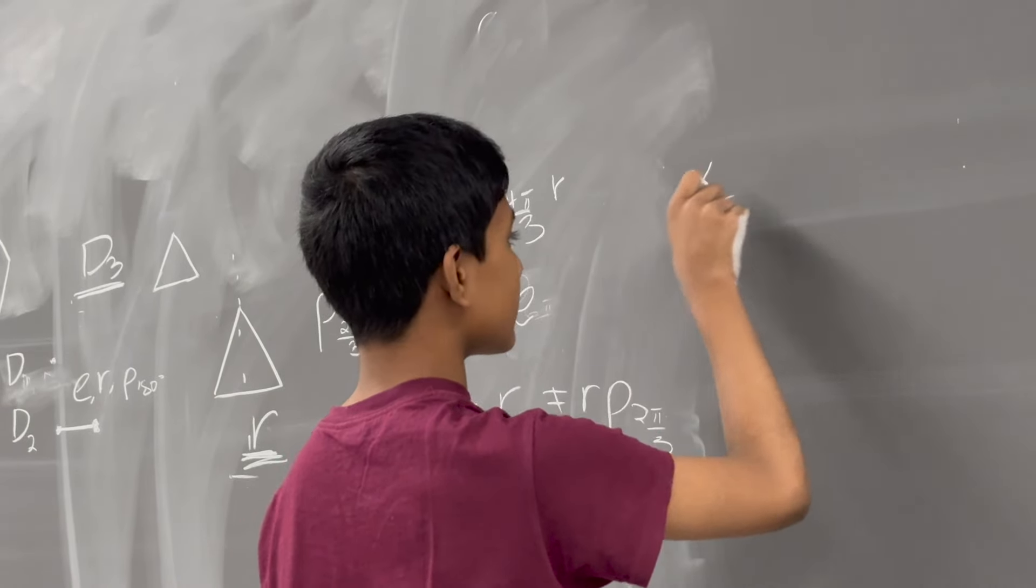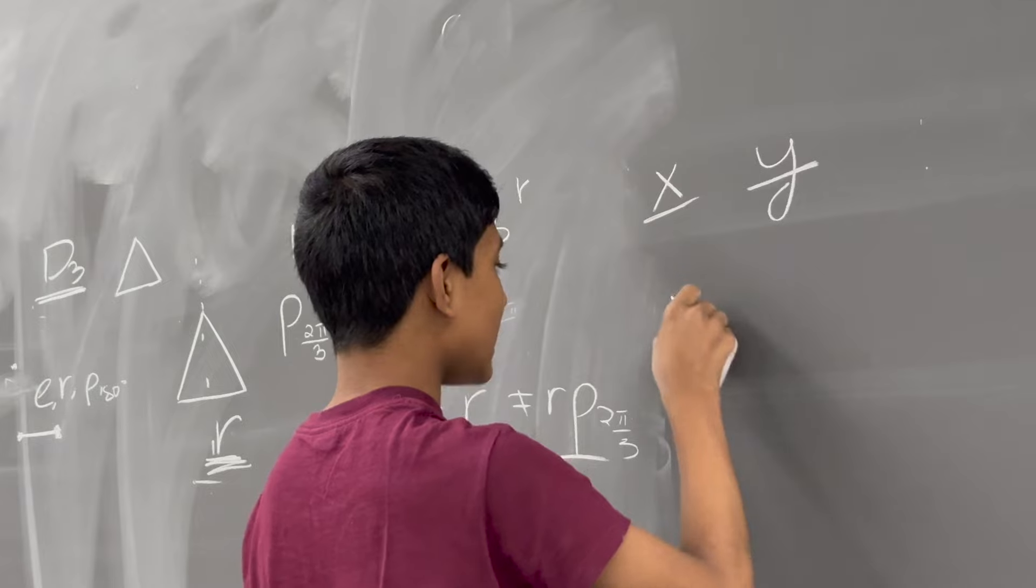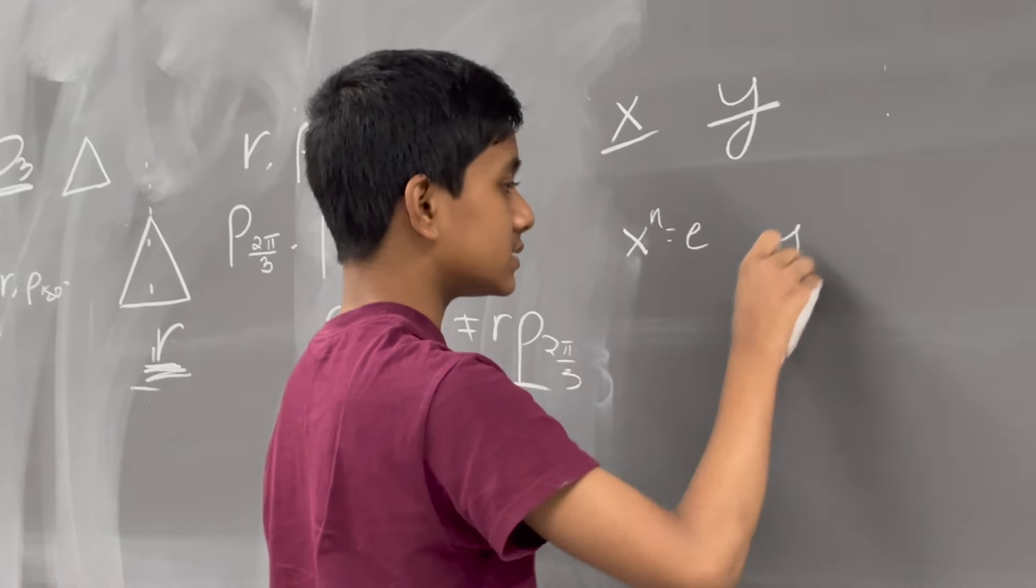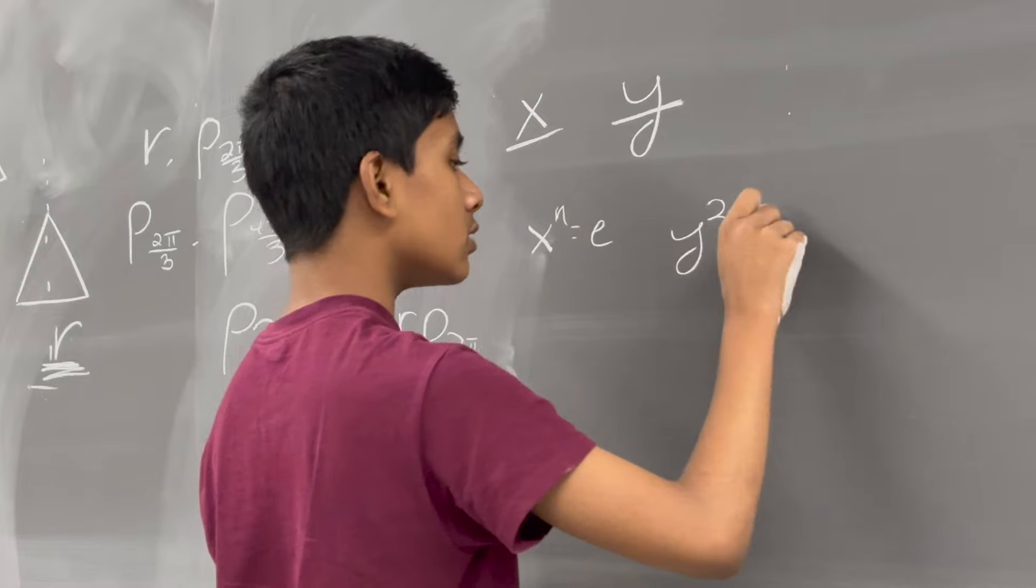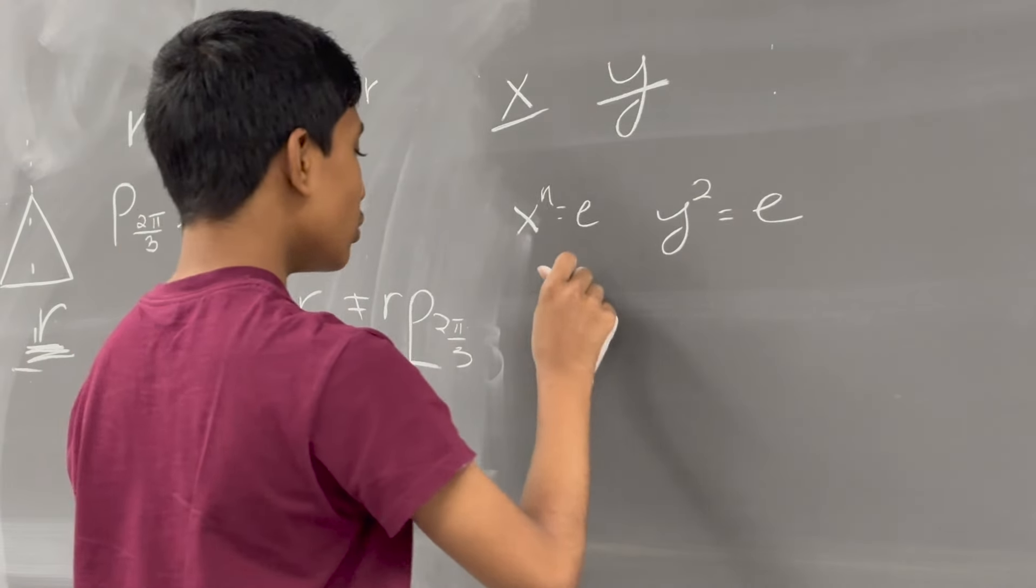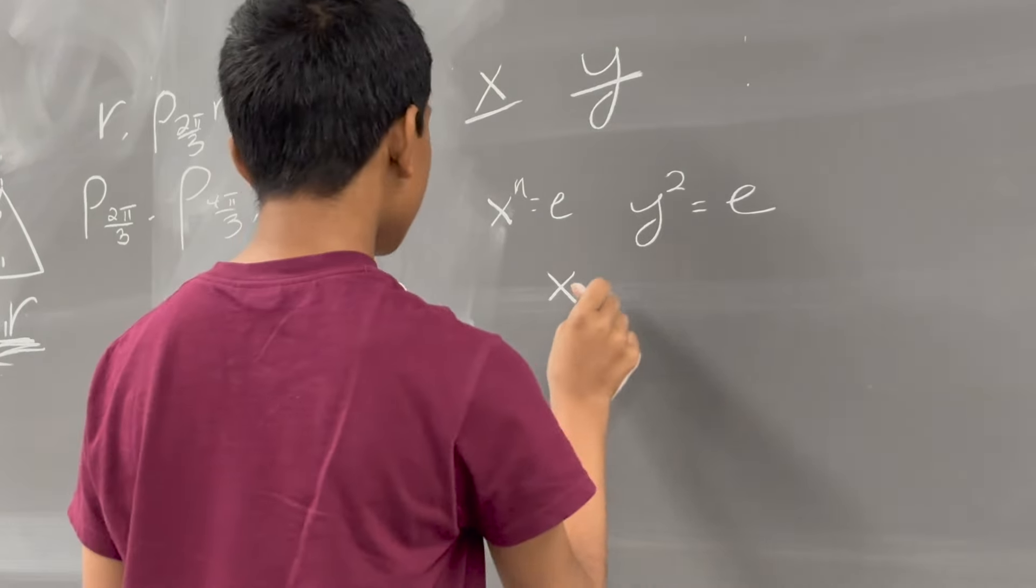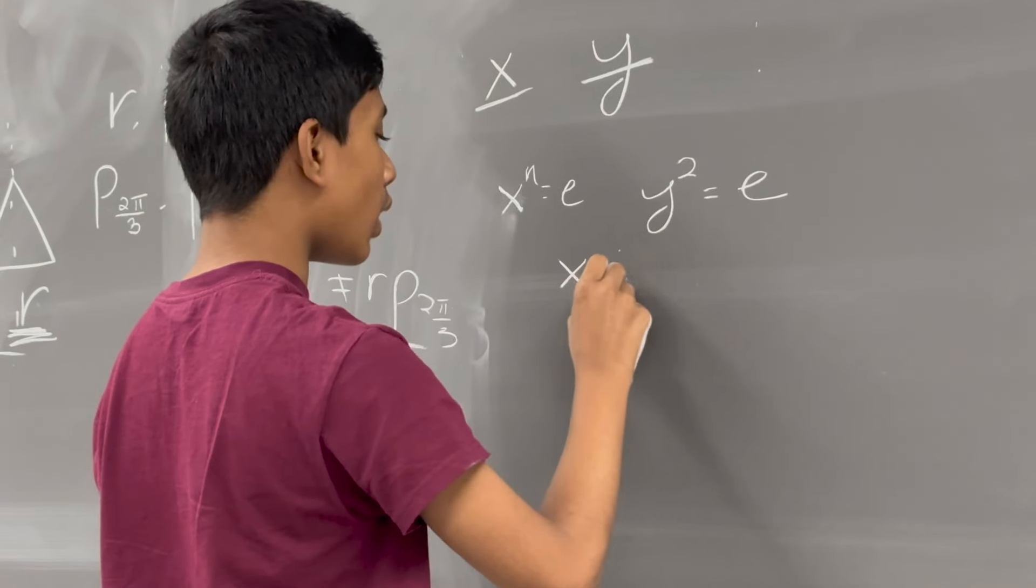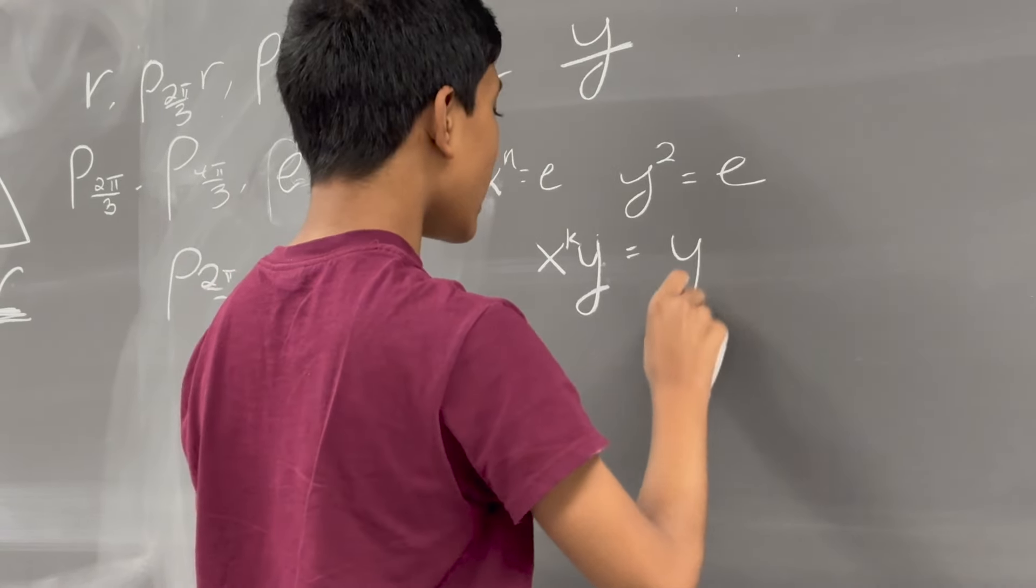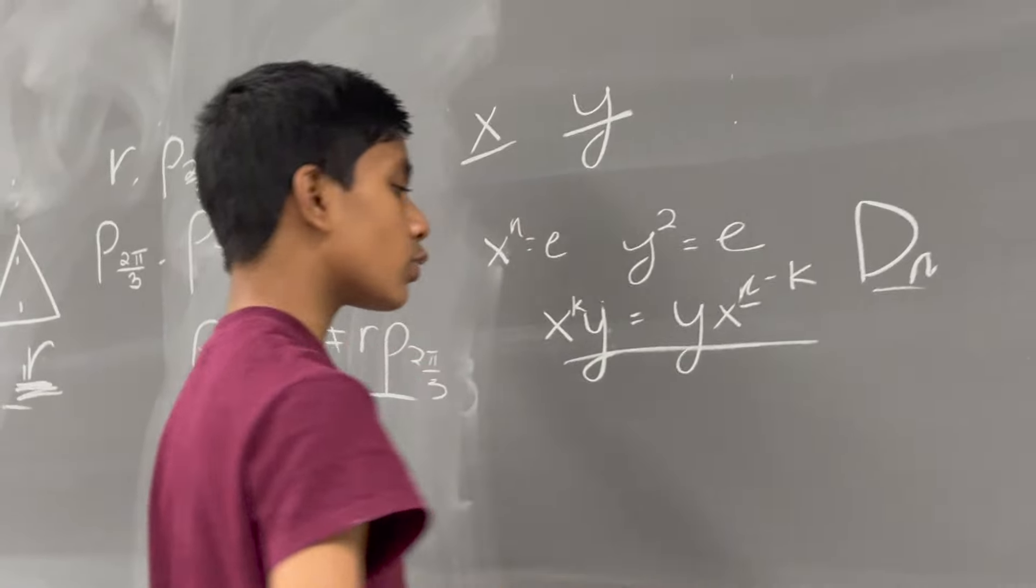But, basically, let's say X is a rotation and Y is a reflection. And, let's say X is just a rotation by 2 pi over N, which means X to the N is equal to E. And, of course, Y is just a reflection around the center, which means Y squared is just equal to E. So, then, what does that mean? Well, that means that we can actually do something pretty clever. We can say X times Y, or X to the K times Y, is actually equal to Y times X to the N minus K, where N is, of course, the N. And, I'll prove this more in detail next time.